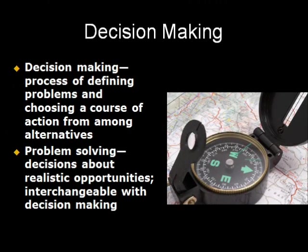Decision-making involves defining problems and choosing a course of action from among many alternatives. It is an important skill that supervisors have to learn and practice. Supervisors must also give employees the chance to learn these skills. As we enter the 21st century, more and more companies are creating empowered employee teams to move the authority for decision-making down the corporate ladder. Companies successful in this, like Motorola, General Electric, and Whirlpool, have found it necessary to train their employees, communicate effectively with them, and remain flexible about the decisions these teams reach. Successful companies also have a high degree of trust in subordinates, provide feedback on how the company fared once decisions were implemented, and reward employees for outstanding decision-making.